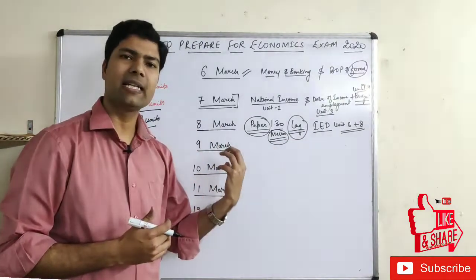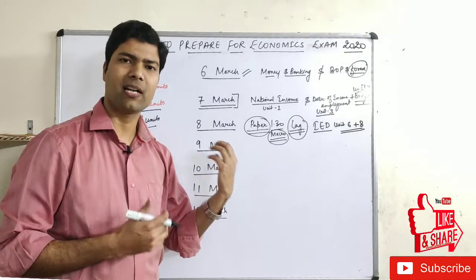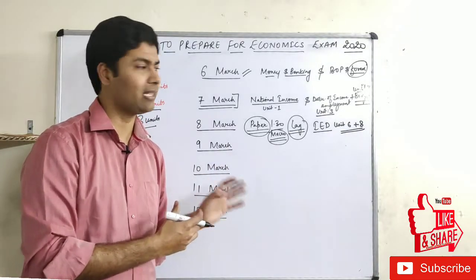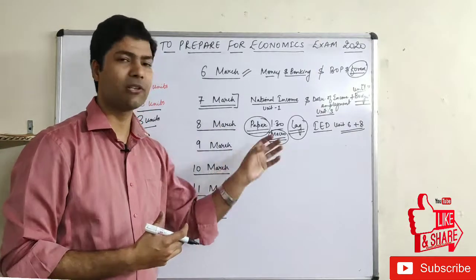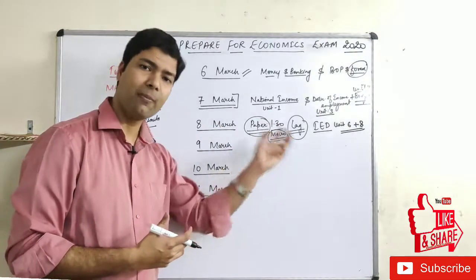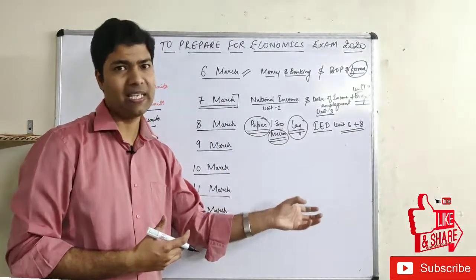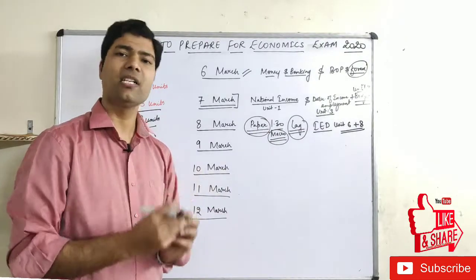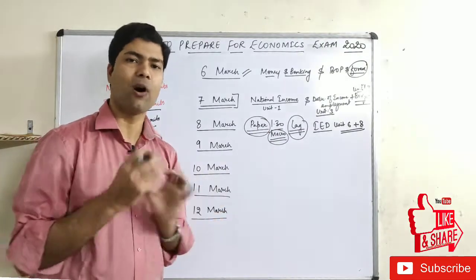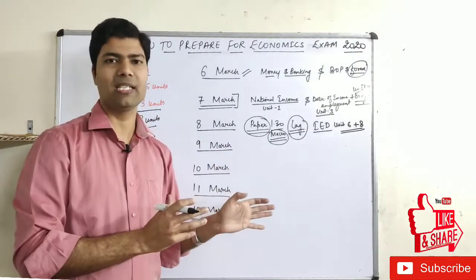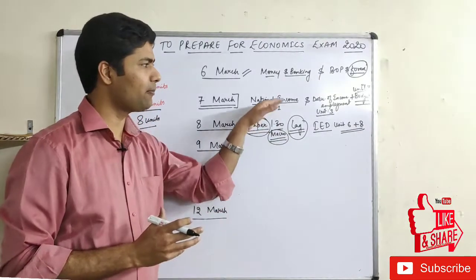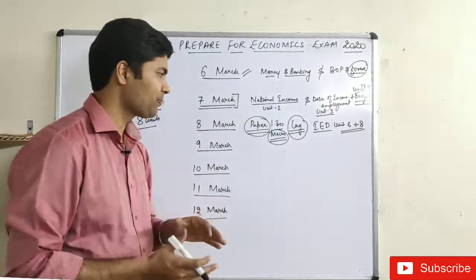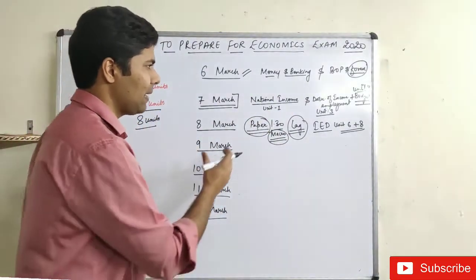Once you are done with the IED section, if you're bored, you can do 2–4 questions from national income, or some questions from determination of income and employment — just for variety. But don't give too much time to that, because you've already covered that section.